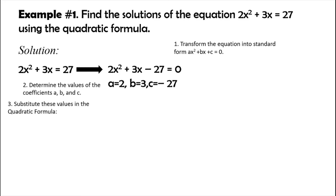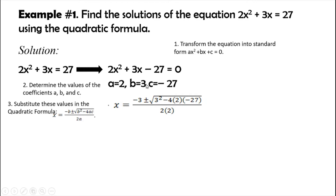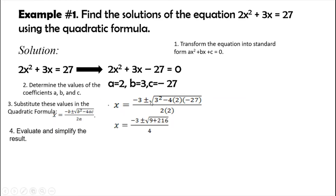Let's proceed to the next step: substitute these values into the quadratic formula. We substitute b equals 3 — don't forget to place the negative sign. So we have: x equals negative 3 plus or minus the square root of 3 squared minus 4 times 2 times negative 27, divided by 2 times 2. Now let's simplify. Inside the radical: 3 squared is 9. Negative 4 times 2 is negative 8; times negative 27 is positive 216. The denominator is 4.